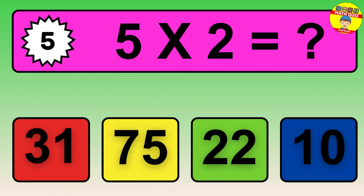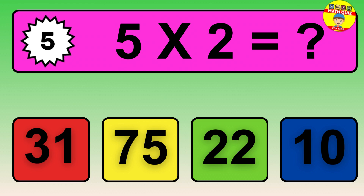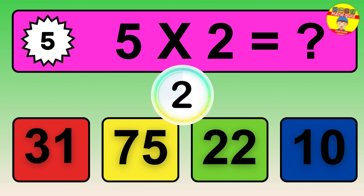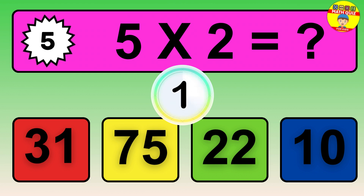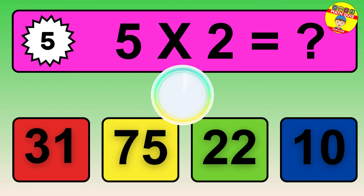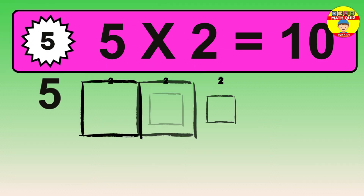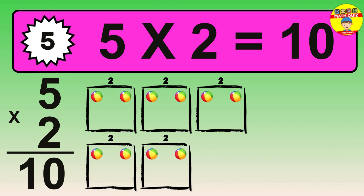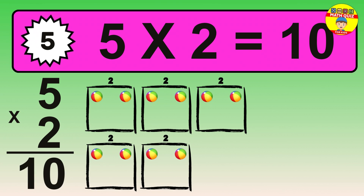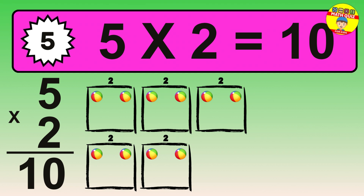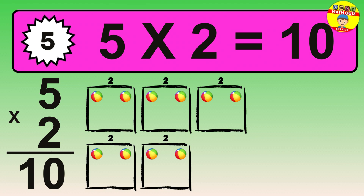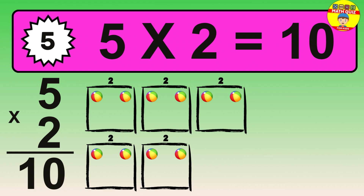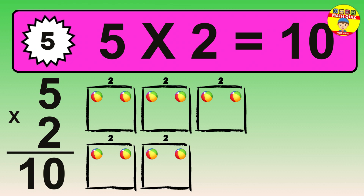Question 5. 5 times 2 equals what? The answer is 5 times 2 is 10. To calculate, we have 5 groups with 2 balls each one. So, how many balls do we have? 10 balls.